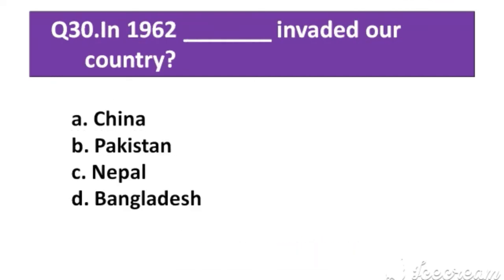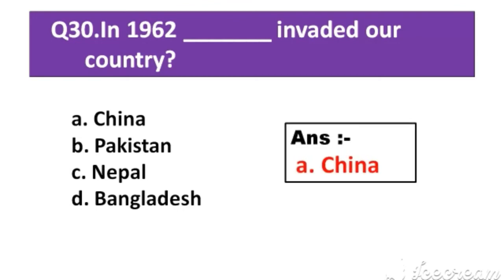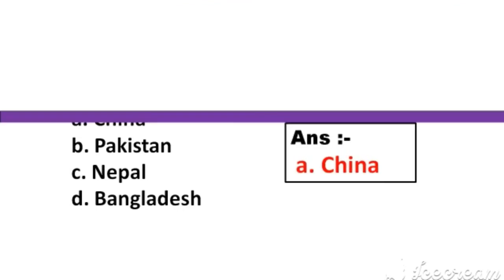Question number 30: In 1962, which country invaded India? Option A: China. Option B: Pakistan. Option C: Nepal. Option D: Bangladesh. The right answer is Option A: China.